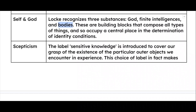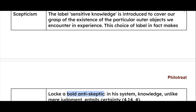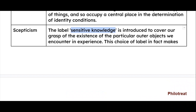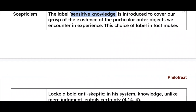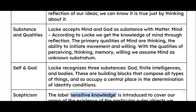Now, skepticism. The label 'sensitive knowledge' is introduced to cover our grasp of the existence of particular outer objects we encounter in experience. This choice of label makes Locke a bold anti-skeptic — he was not a skeptic, he was an anti-skeptic. Whatever things are outside of our understanding, he placed under the sensitive knowledge label, and therefore he was an anti-skeptic.